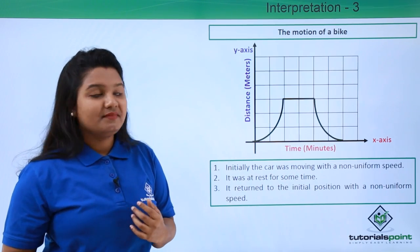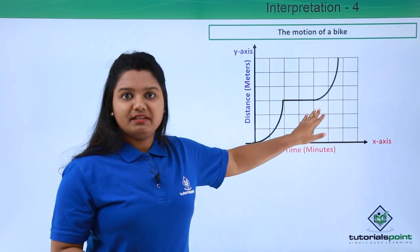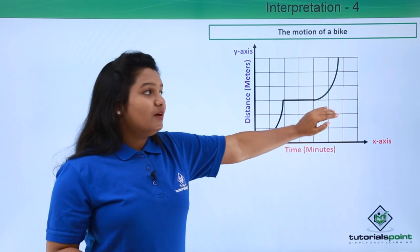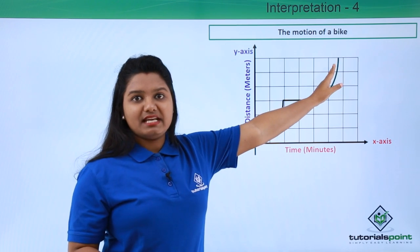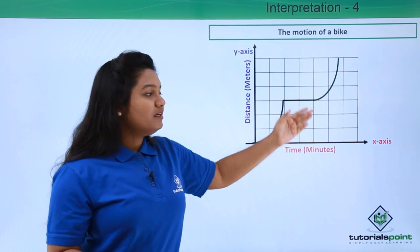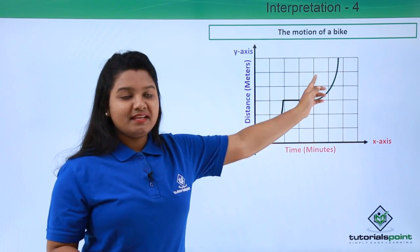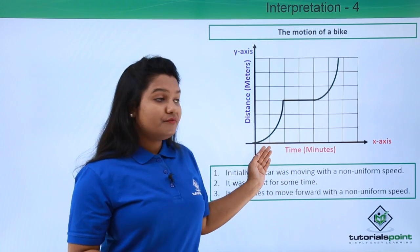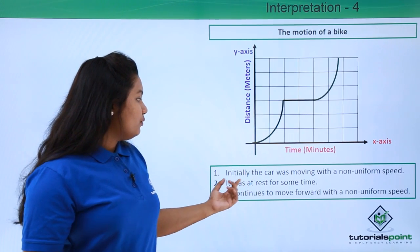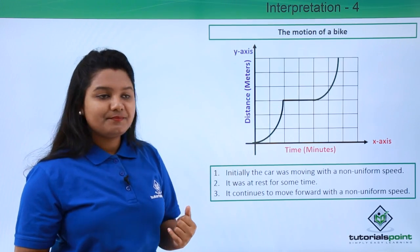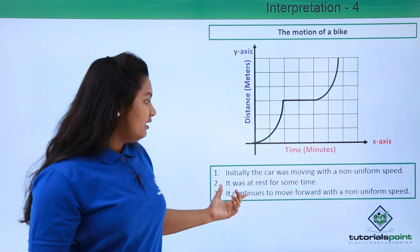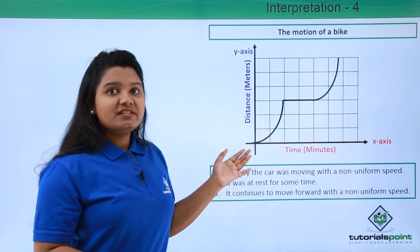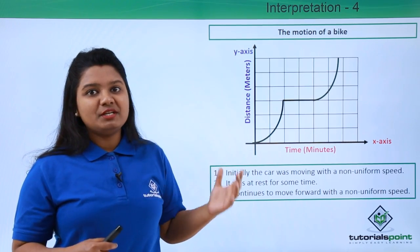The last graph is similar to the previous one, but here the final curve moves upward instead of downward. This means the distance of the bike is increasing with time — the bike has not returned to its initial position but continued moving forward with non-uniform speed. So: initially the bike moved with non-uniform speed; then it was at rest, represented by the portion parallel to the time axis; then it continued forward with non-uniform speed.